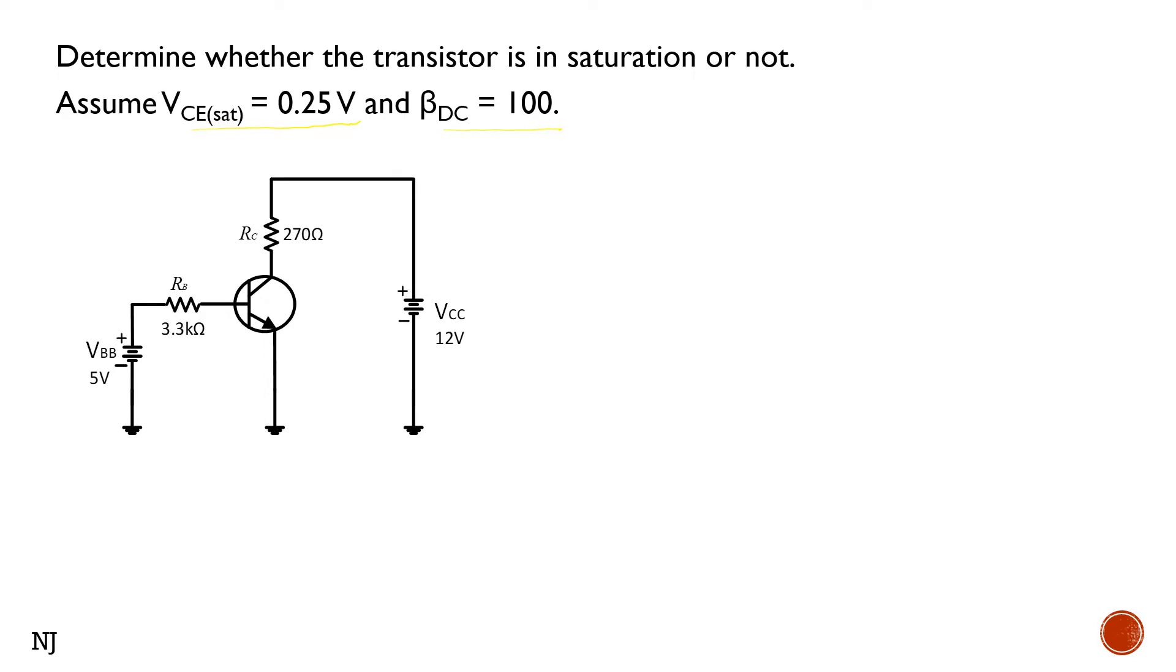To solve this problem, first we need to determine the saturation collector current IC saturation. IC saturation equals VCC minus VCE saturation over RC. Substituting all the values we have: 12V minus 0.25V over 270 ohms equals 43.52 milliamps.